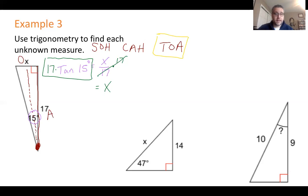And you should get approximately 4.56. We'll round it to, usually I like to do these two, either the tenths or the hundredths place. So two decimals is fine.